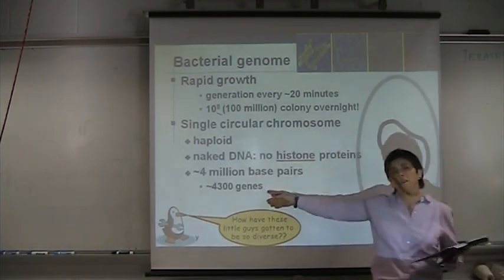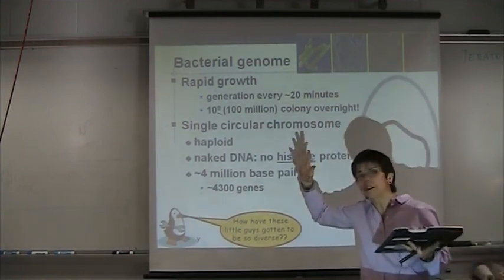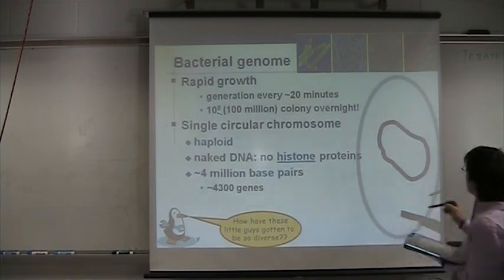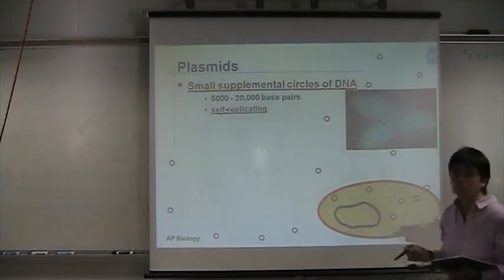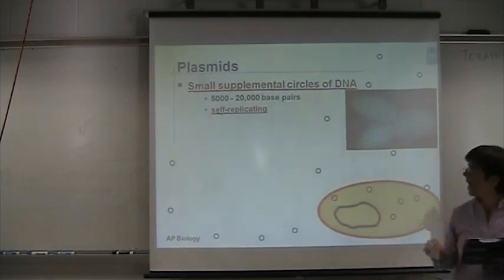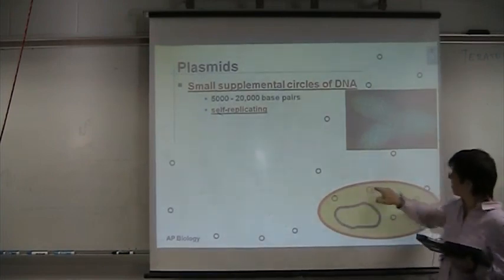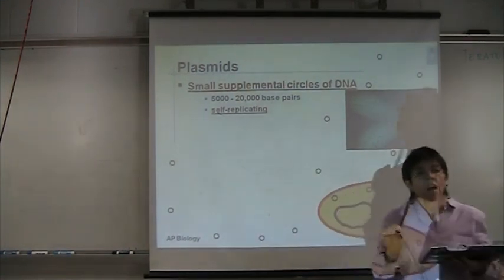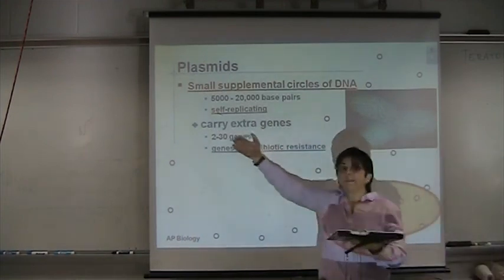Bacteria have about 4,300 genes in their genome. Just for the record, we have around 30,000 genes in our genome — we are a little bit more complex in that sense. Here you have your bacteria, your circular DNA. But the part that is really useful about bacteria is the plasmids. Plasmids are small sequences of DNA that bacteria have in addition to the regular DNA — only 5,000 to 20,000 bases — and they carry a few genes, from 2 to maybe 30.